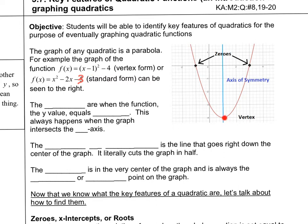In vertex form you can quickly tell the vertex is at (1, −4). In standard form you can see the y-intercept is −3. You could also factor this into (x + 4)(x − 3)... actually (x + 3)(x − 1)... giving you factors with zeros at negative 1 and positive 3, because the zeros are the opposites of the factors. These are all things we've talked about before.